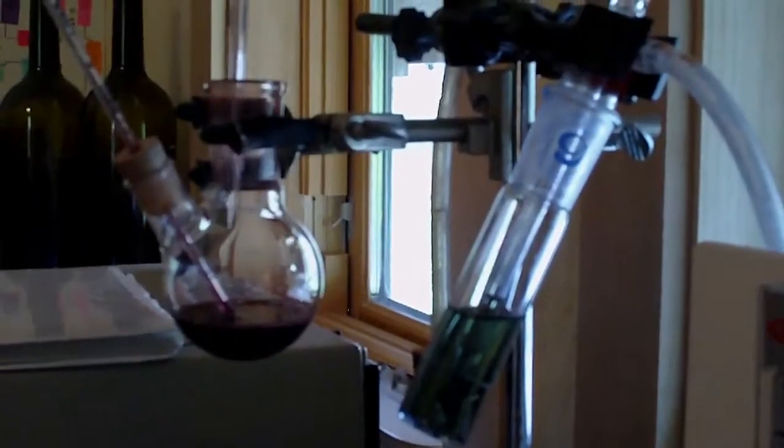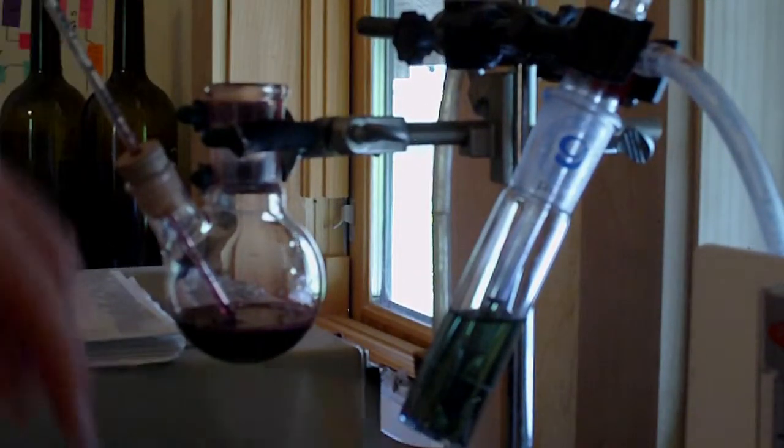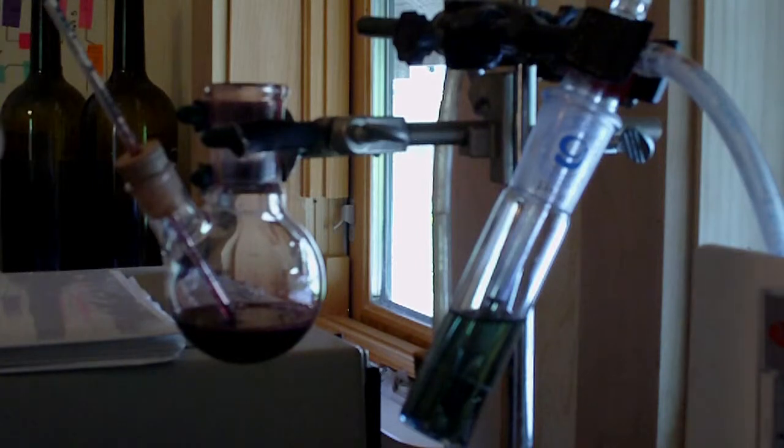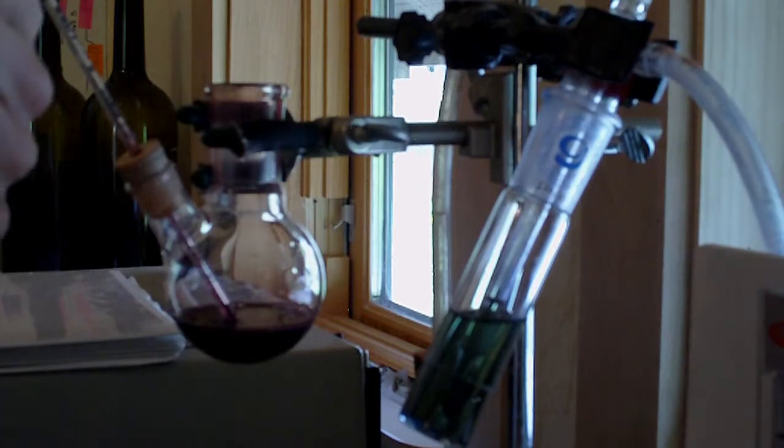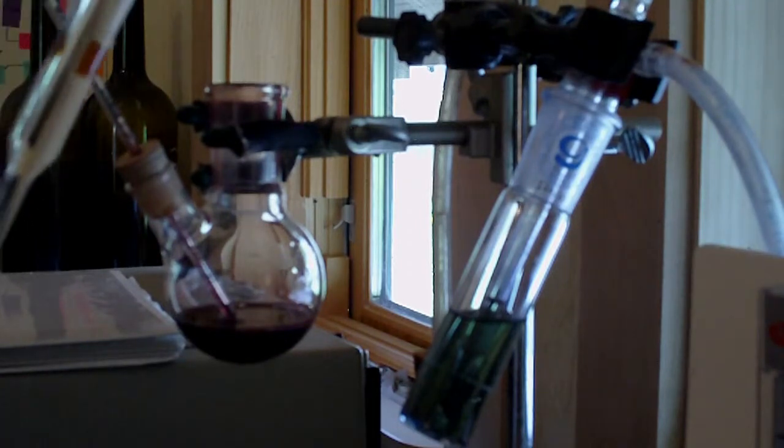Once the solution is turned purple and the test is finished, then we just titrate with an acid solution back to green in order to see how much sulfur is actually in the wine. There's a special calculation to figure that out.